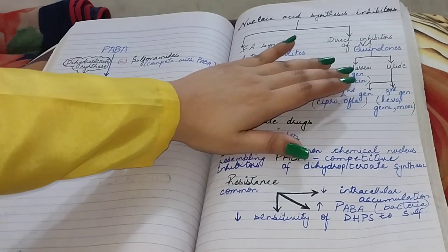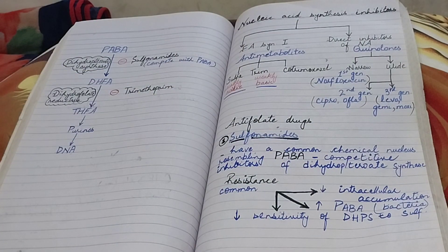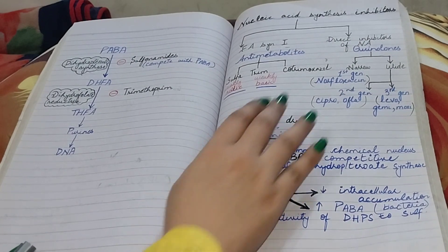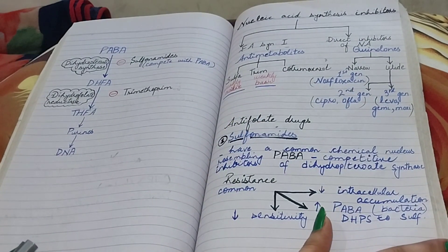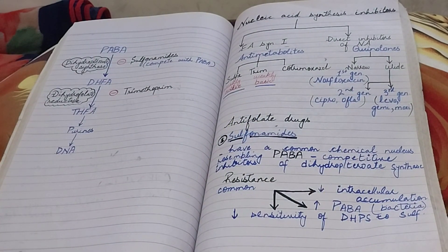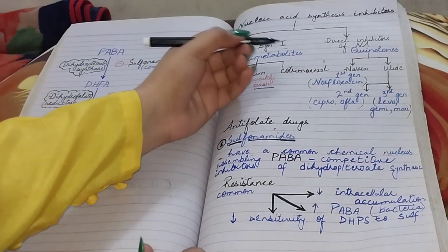First generation quinolones are included in narrow spectrum. First generation quinolones like norfloxacin, this norfloxacin is active against common pathogens that cause UTIs.